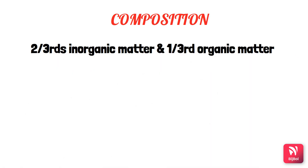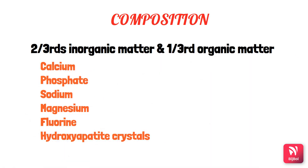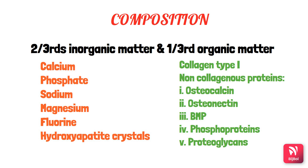The composition of alveolar bone is two-thirds inorganic matter and one-third organic matter. The inorganic matter includes calcium, phosphate, sodium, magnesium, fluorine, and hydroxyapatite crystals. The organic matrix is made up of 90% type 1 collagen, plus non-collagenous proteins including osteocalcin, osteonectin, bone morphogenic proteins (BMP), phosphoproteins, and proteoglycans.